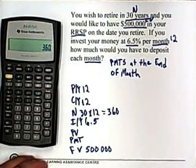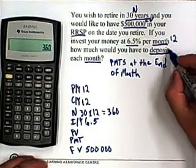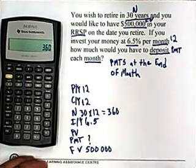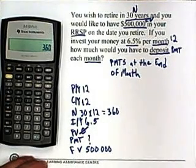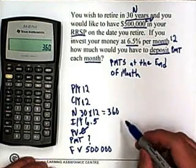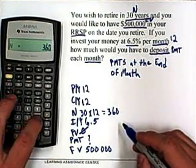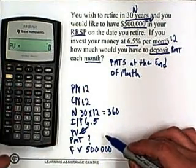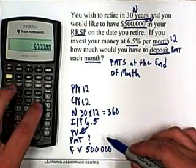We're looking for how much to deposit each month. A deposit means payment, so we're looking for PMT — I'll put the question mark beside payment. I'll make the PV 0, because any button that's not being used should have a 0. The 360 is already in the calculator, so I'll hit the N button. Then it's 6.5 IY, 0 PV, and 500,000 FV.